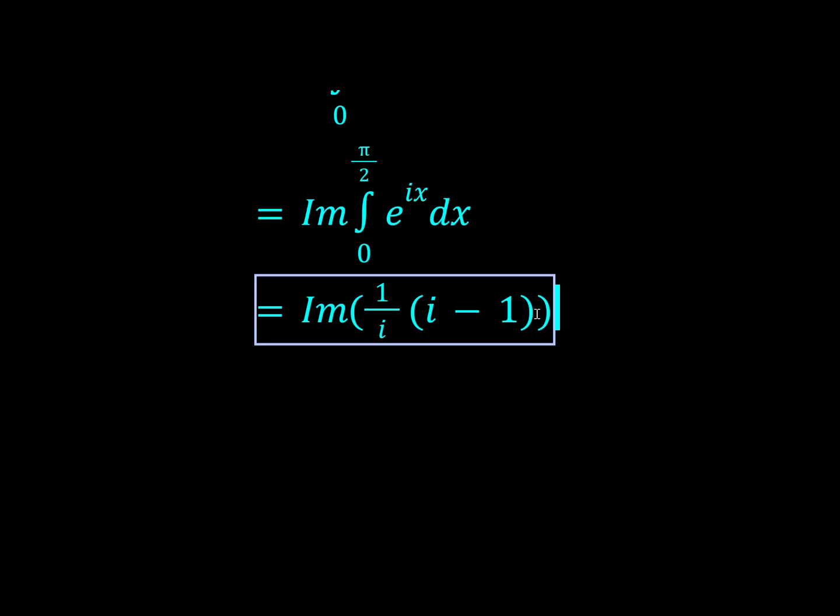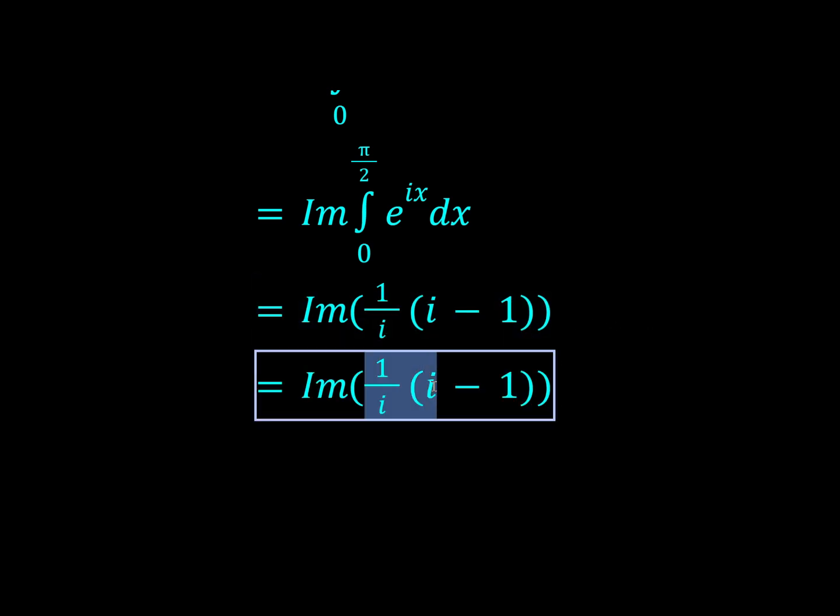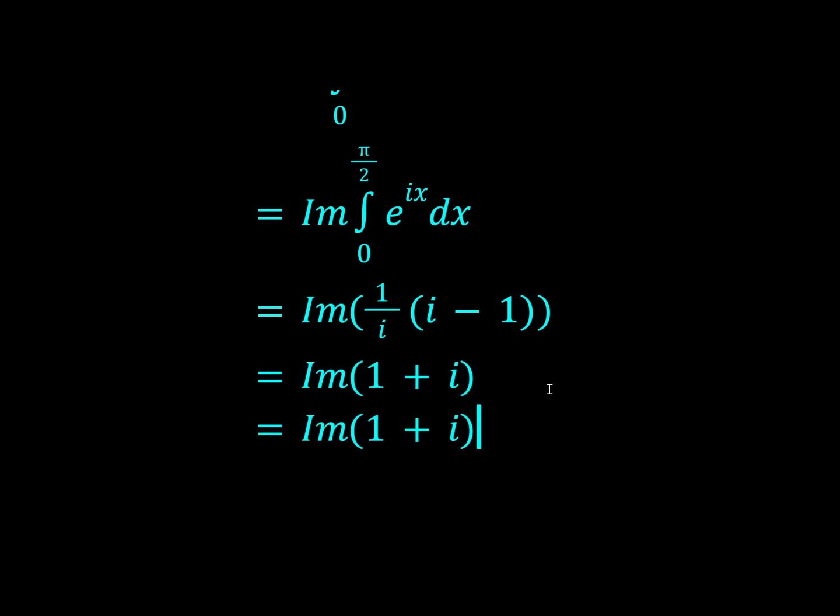Now we just have the imaginary part of 1/i times (i - 1). So let's just expand this out. We're going to get 1 here and then minus 1/i. And 1/i is actually minus i, so we have 1 + i.